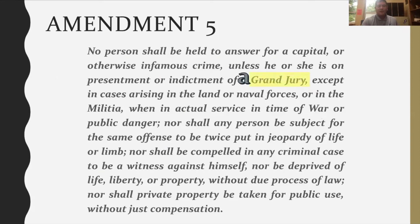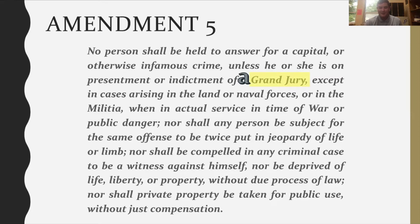The Fifth Amendment covers several things. For a capital crime, you have the right to be indicted by a grand jury, which reviews the evidence before trial to decide if the person should be charged. You also can't be tried twice for the same crime — that's called double jeopardy. So if someone like OJ is declared innocent, you can't try them again for that murder, even if new evidence surfaces later.